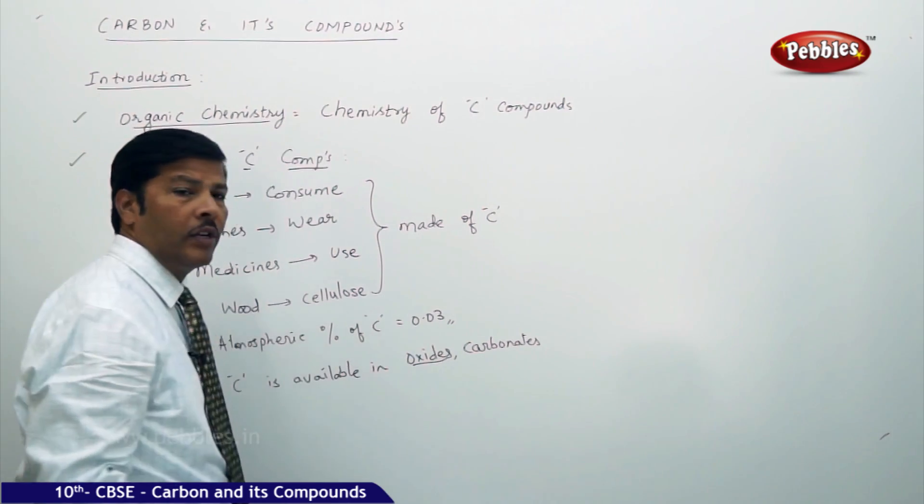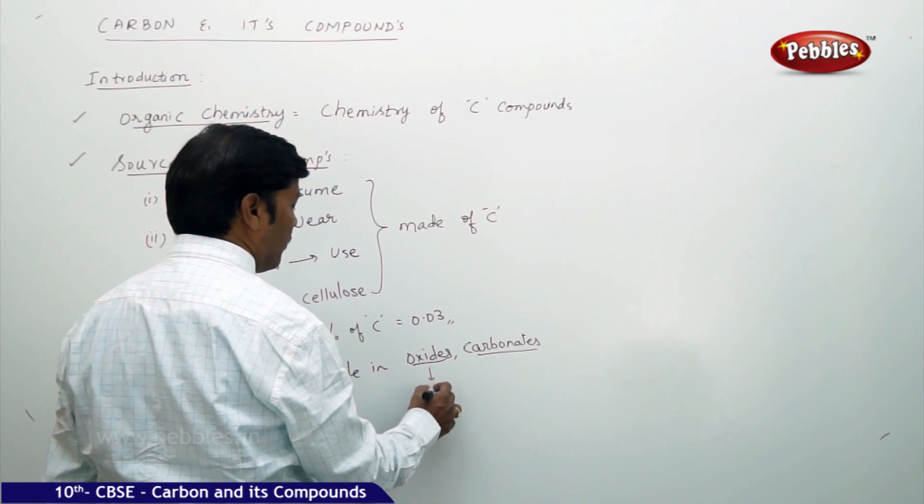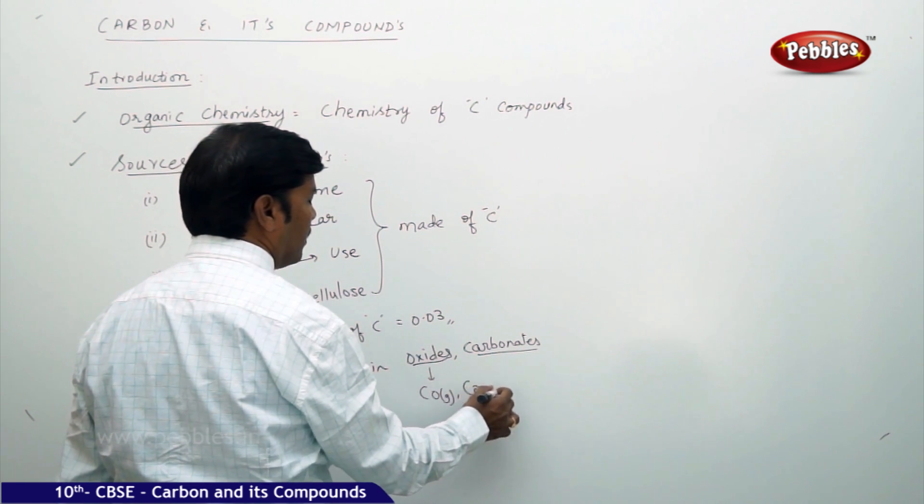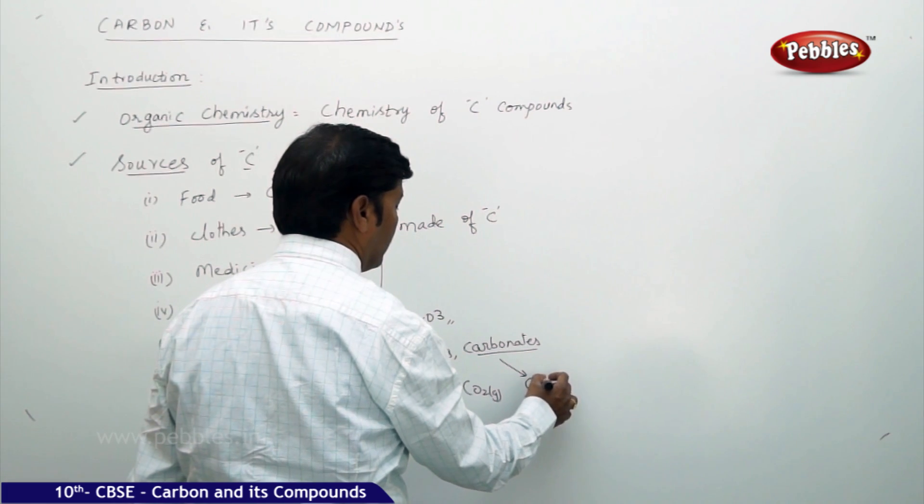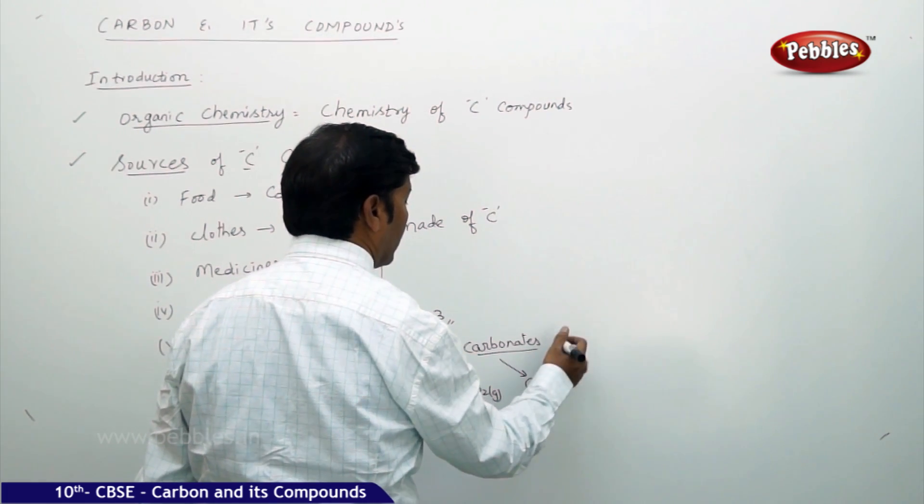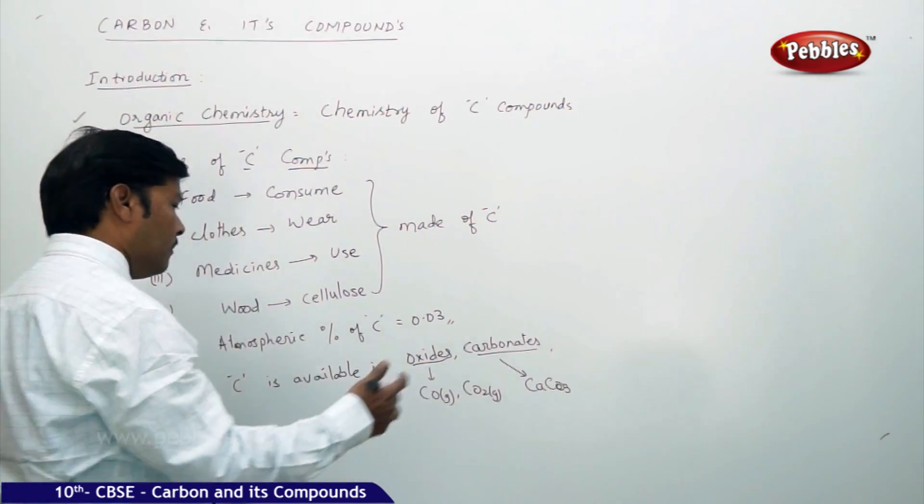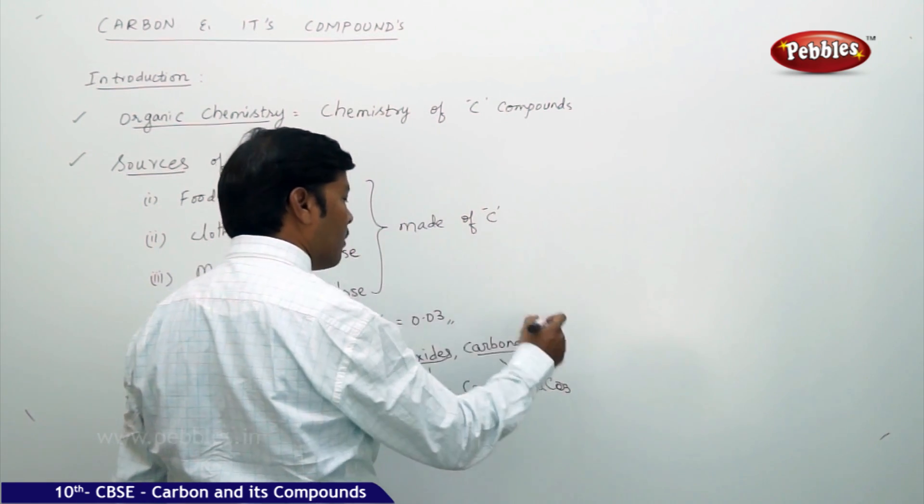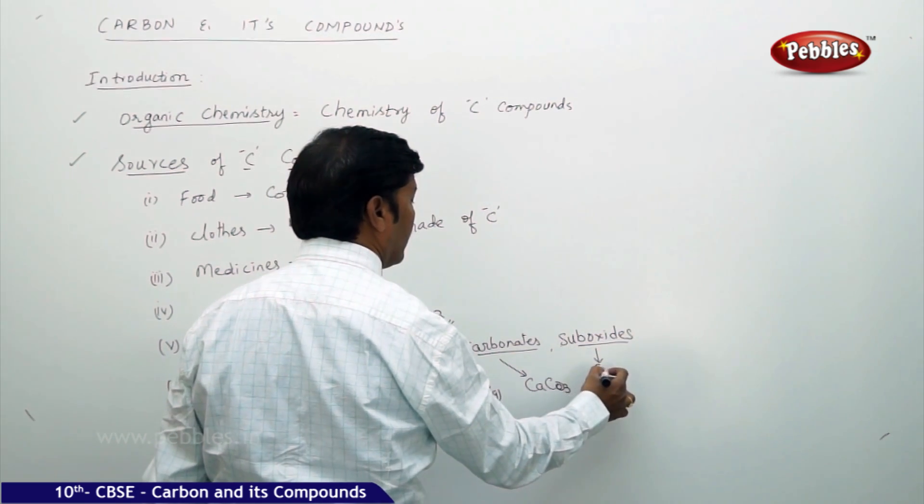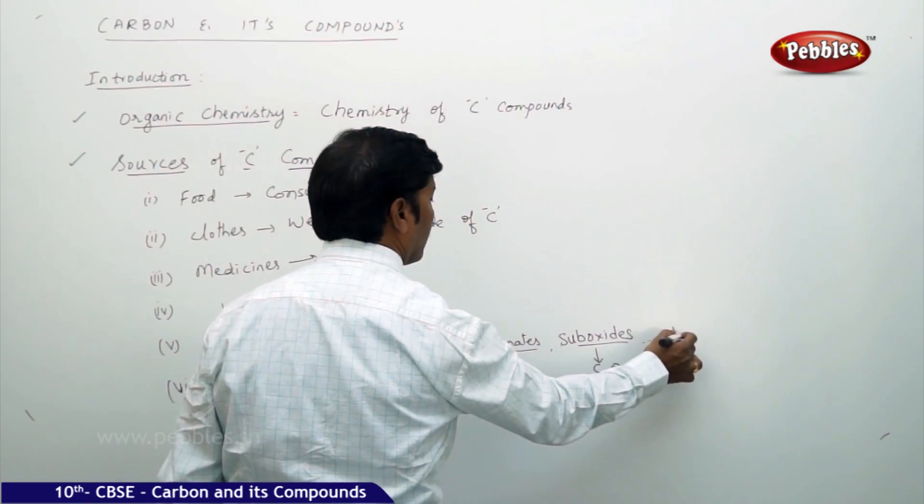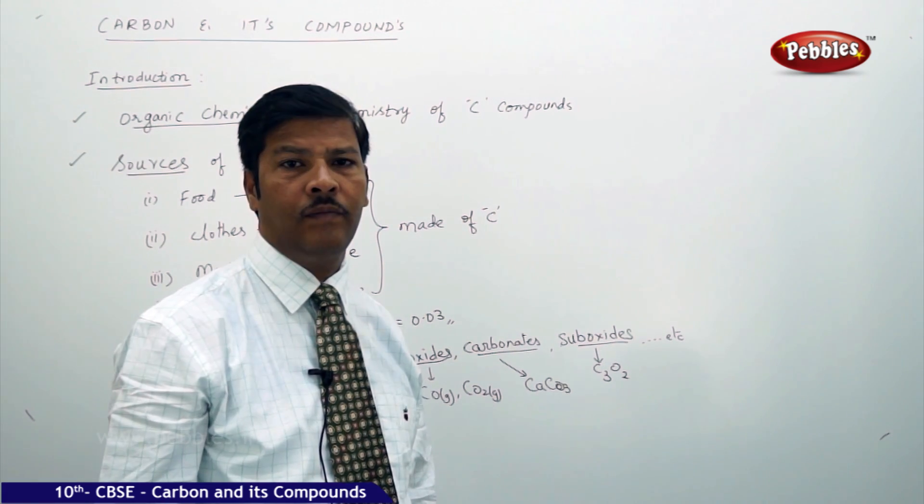Carbonates, oxides, carbonates, then chlorides. Oxides and carbonates means you can take carbon monoxide gas and carbon dioxide gas. Carbonates contain calcium carbonate. Sometimes you can even take it in the form of sub-oxides: C3O2 and so on. All these are sources of carbon compounds.